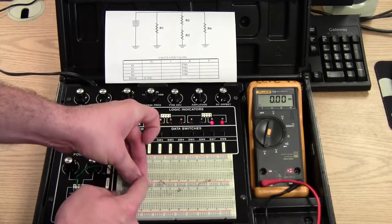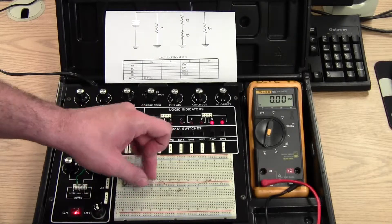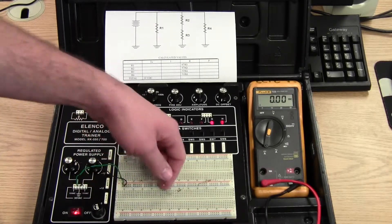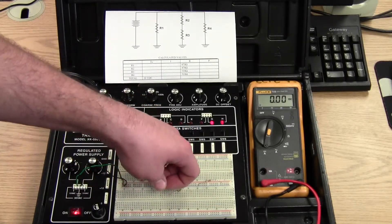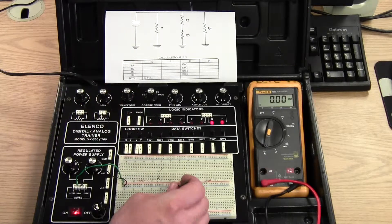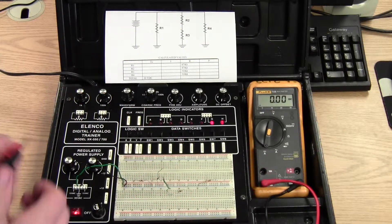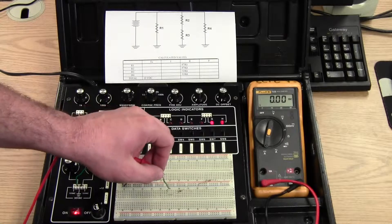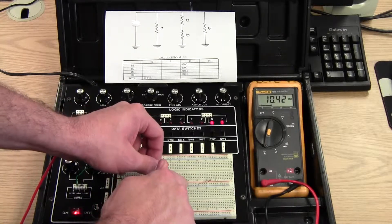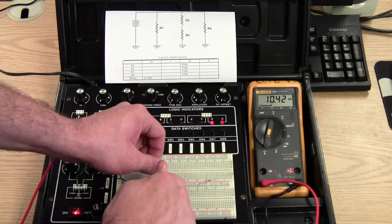I'm going to do the same thing for R3 or R2. Pull one end out. Put my spare wire in the exact same place that I've removed the resistor from. Go from the resistor to the spare wire. And I get 10.42 milliamps.